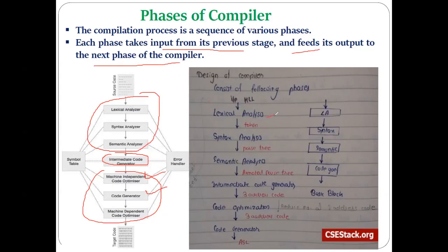We've already seen this many times: the lexical analyzer generates tokens, gives them to the syntax analyzer, and so on. We have reached up to the intermediate code generation phase. The intermediate code generation generates the intermediate code in the form of three-address code and gives it to the next phase — code optimization — which we are about to discuss.